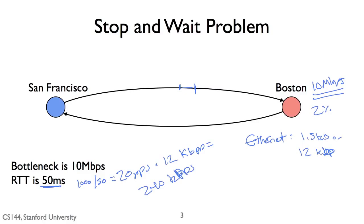So this path between San Francisco and Boston using a stop-and-wait protocol can send at most 240 kilobits per second, assuming no packets are lost and a constant RTT of 50 milliseconds. But the bottleneck is 10 megabits per second. This means that this stop-and-wait protocol is using only 2% of the capacity of what the communication can be. Stop-and-wait, while it works, can be astoundingly inefficient.